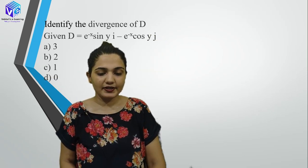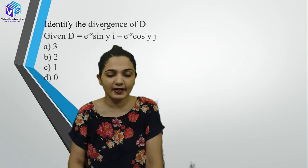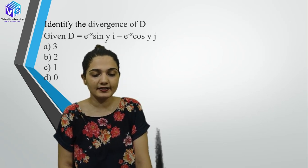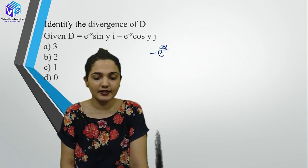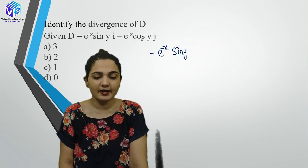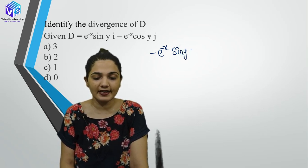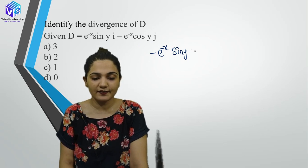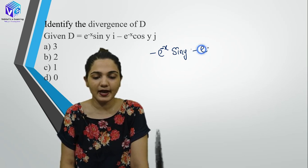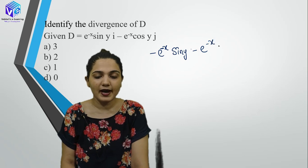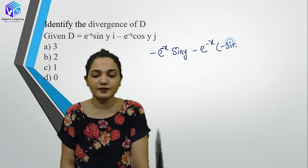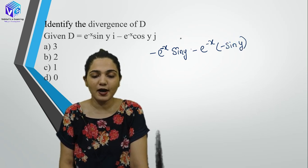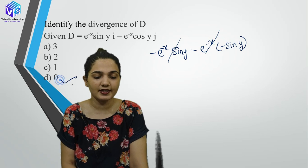Identify the divergence of the next vector. Differentiating with respect to x: −e^x · e^(−x) · sin(y). Then differentiating with respect to y: −e^(−x) · (−sin(y)) = e^(−x)·sin(y) · (−cos differentiation). These two terms cancel out, and the answer is 0.